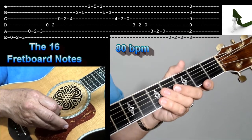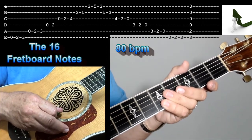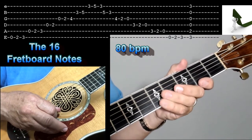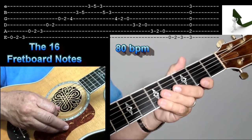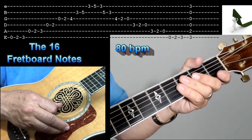All right, so I'm going to set the metronome at 80 beats per minute. Now, if you're a better guitar player, you can set it up at 100 or even 120. 120 is where you eventually want to be able to get to.